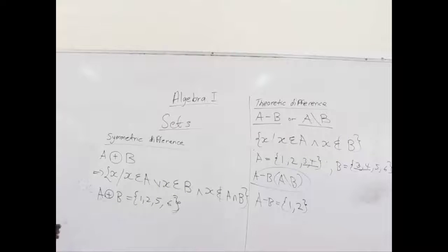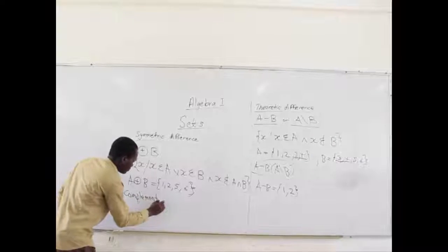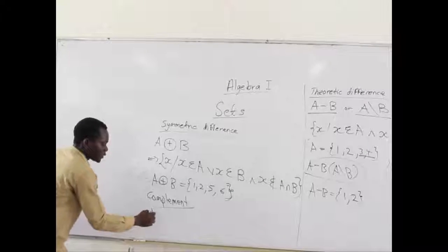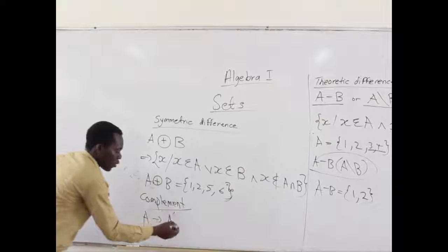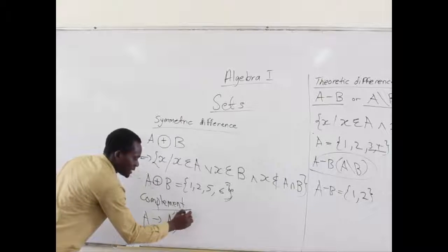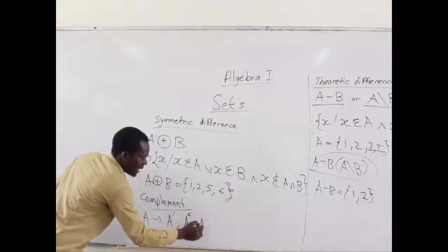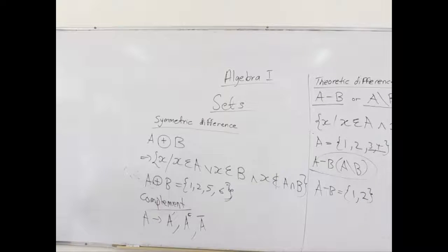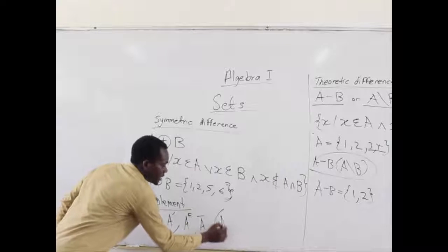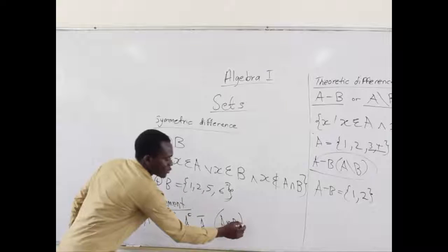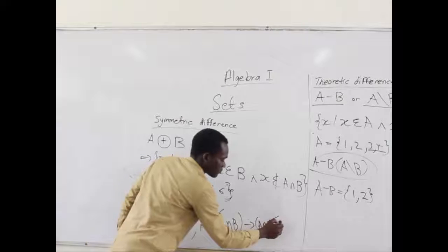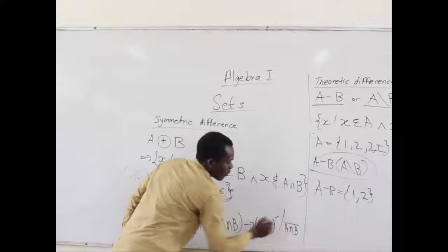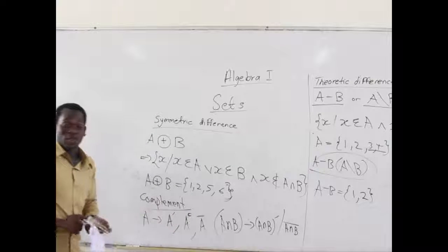And also, last, here we will talk about the Complement of a set. Assuming you have a set A, its Complement can be written as A with a stroke up there, or you can use A with a superscript C, or you can also write an A with a bar on top of it. Any way that you write it is accepted. So, assuming we have A intersection D and you want its Complement, you can write it as A intersection D with complement, or A intersection D with bar. Any format you want to use is accepted.